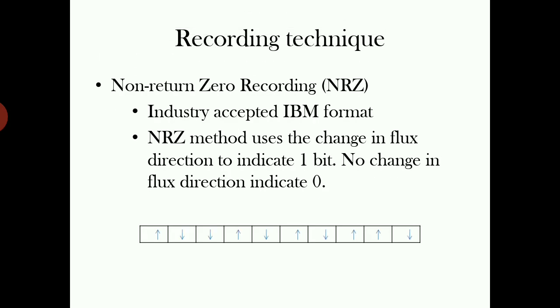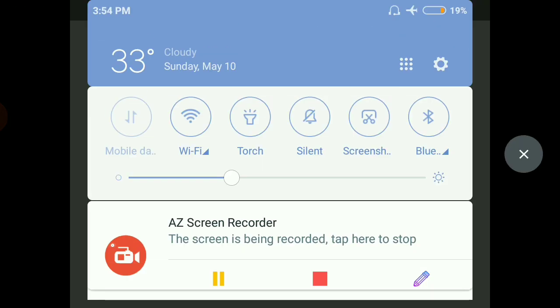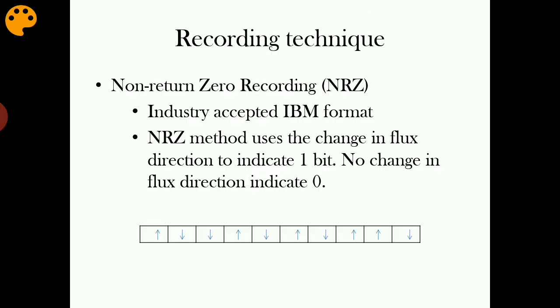The commonly used recording technique is non-return zero recording method. It is a widely accepted IBM format. In an NRZ method, the change in flux is used to indicate a bit. If there is a change in flux, then it is indicated by bit one, and if there is no change in flux, then that indicates a zero bit.